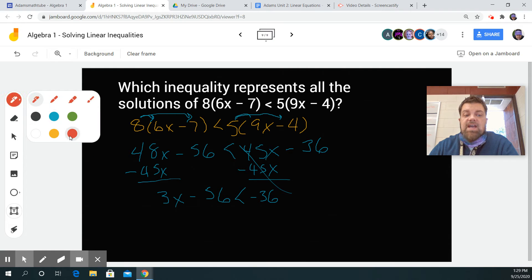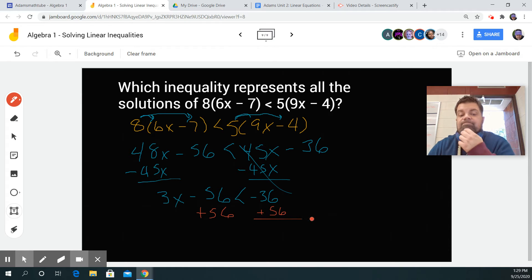Next, I'm going to add 56 to both sides. And these will cancel, so I'm left with 3x is less than 56 minus 36 is a positive 20.